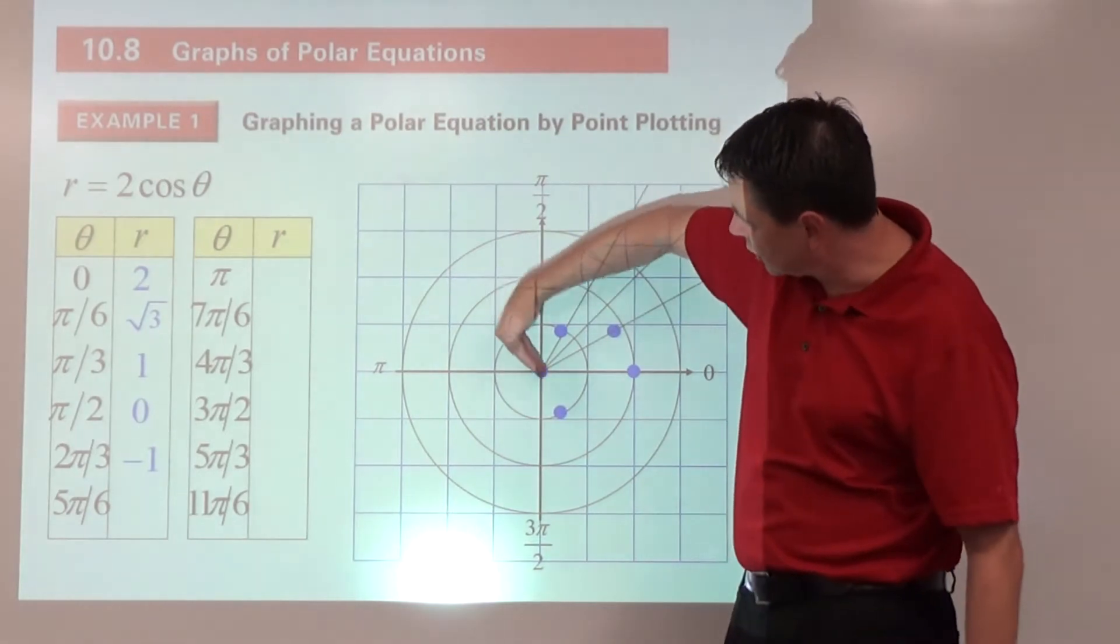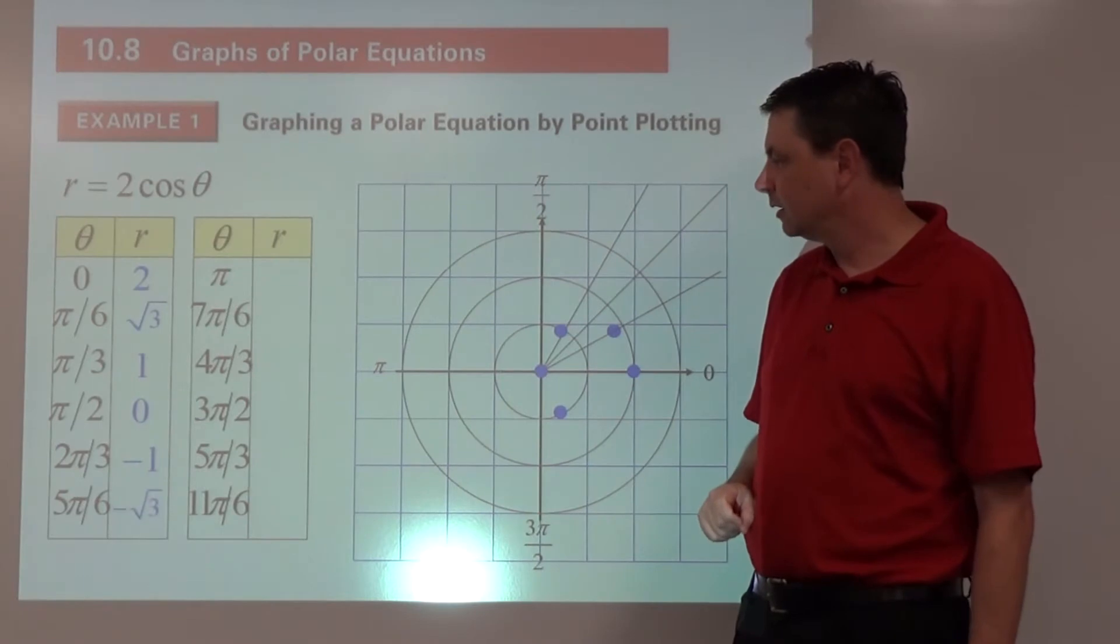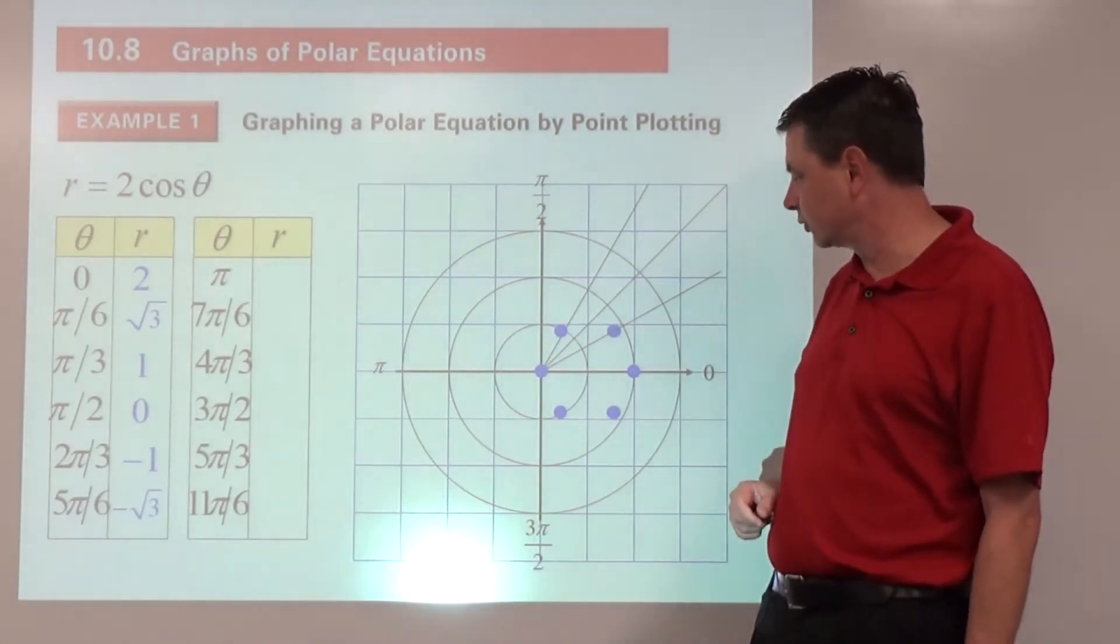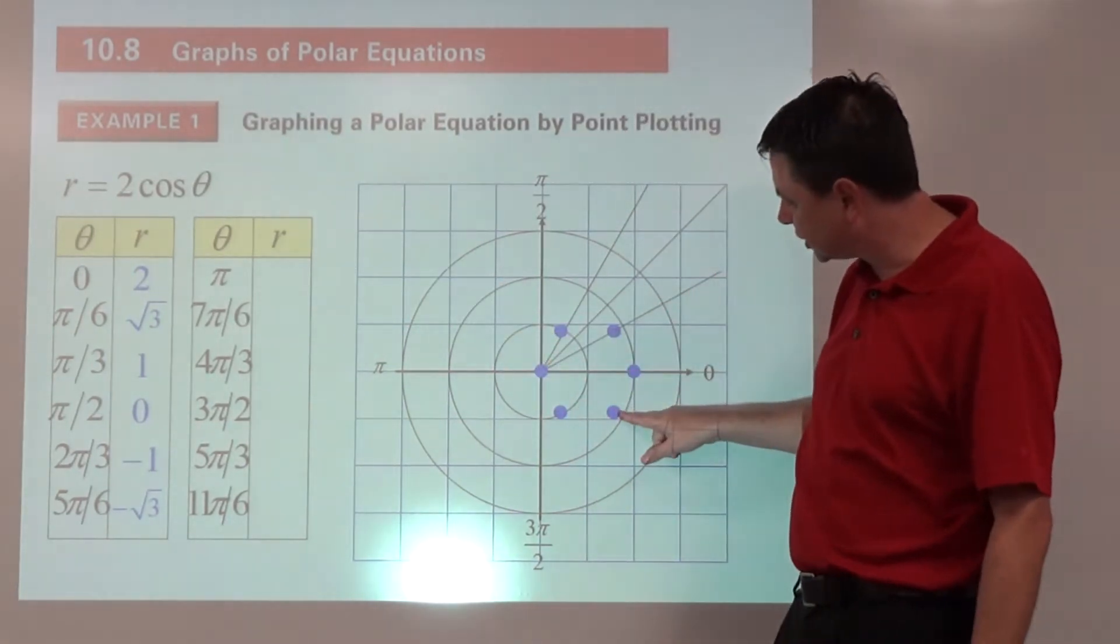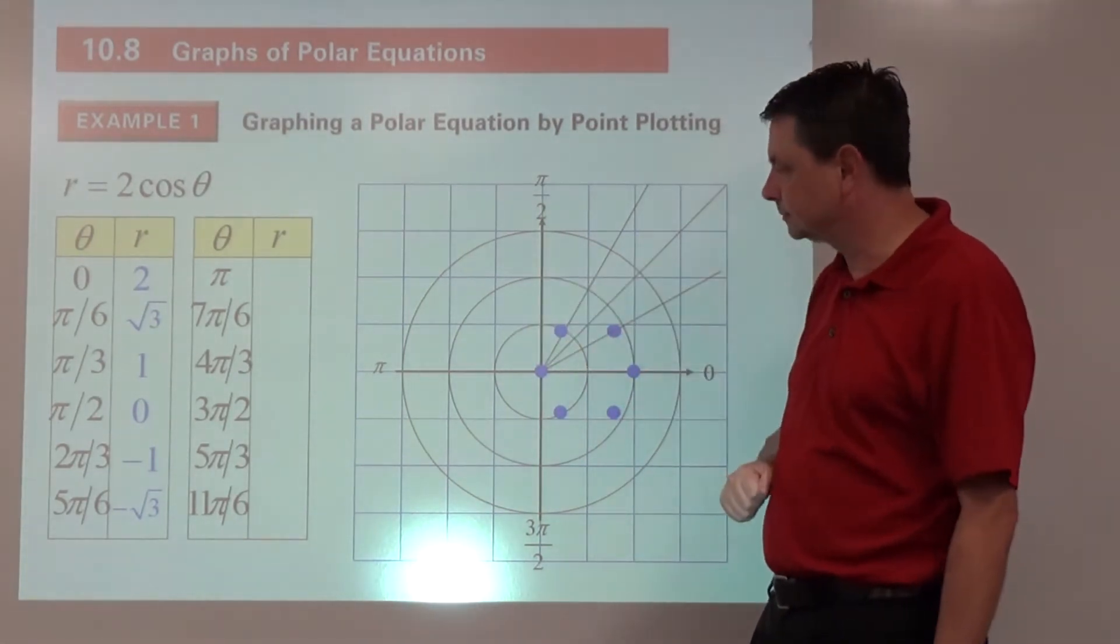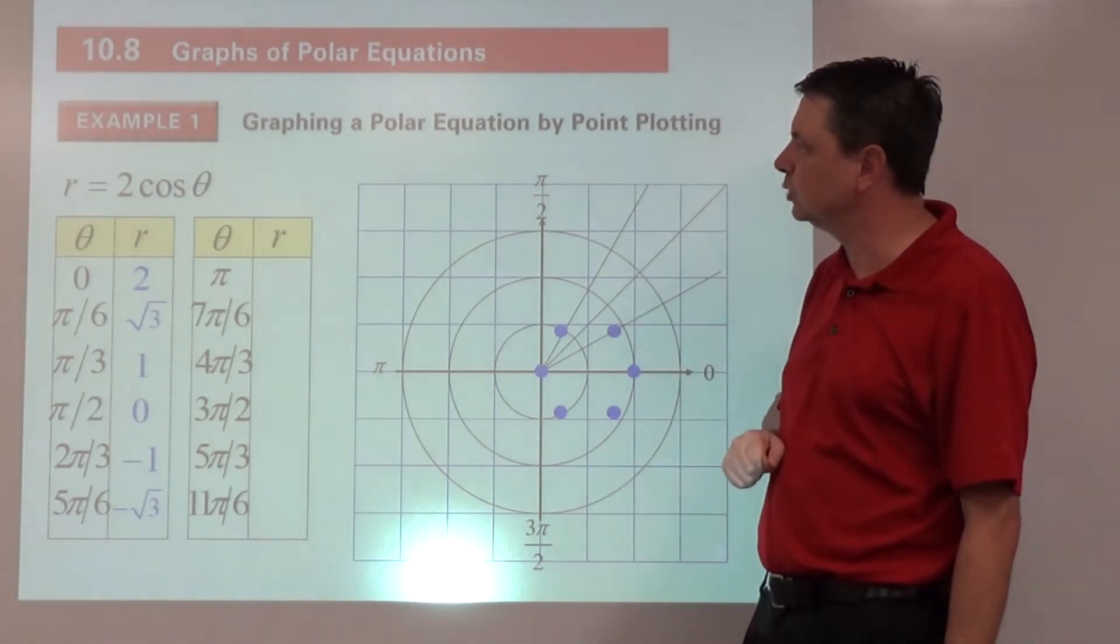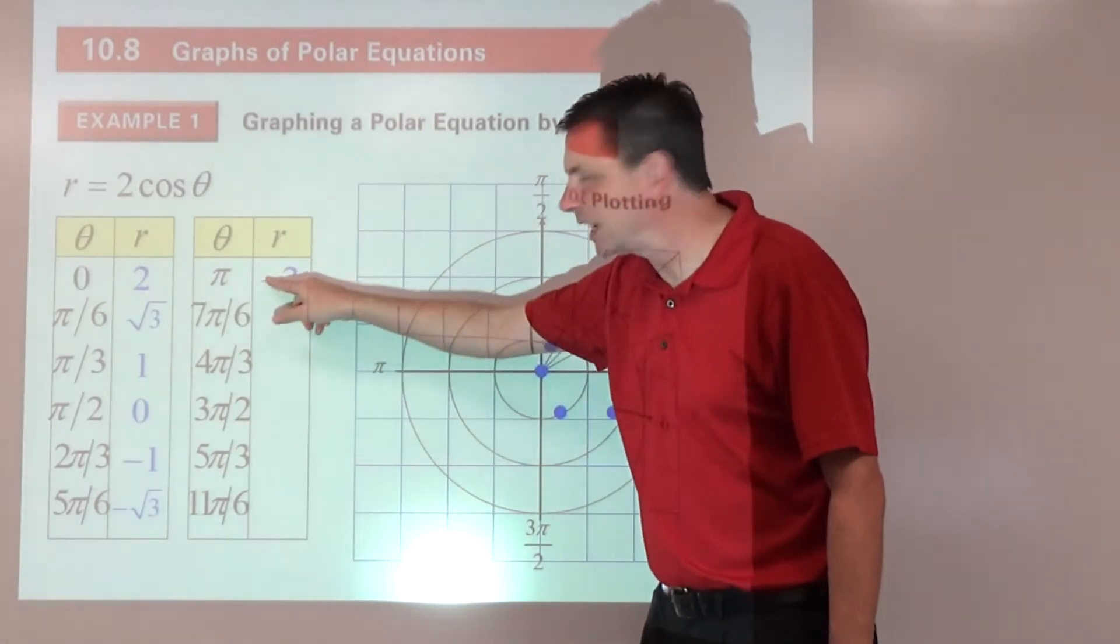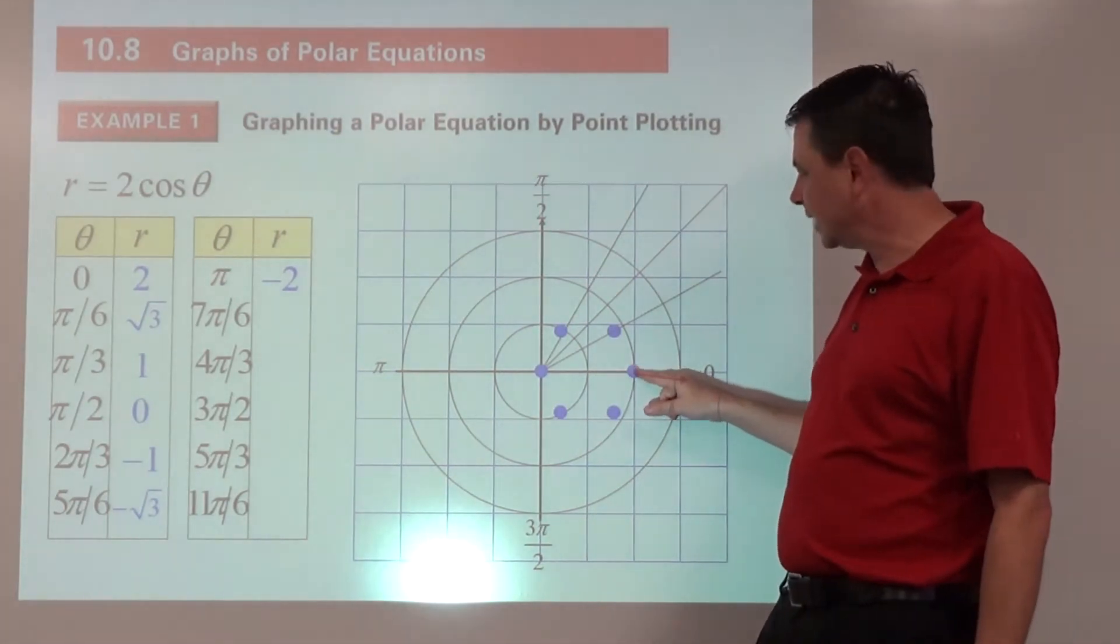So 2 pi over 3 is this way. Negative 1 means go the opposite direction or here. 5 pi over 6, cosine is negative root 3 over 2, go the opposite direction about 1.7 in that direction. Pi, cosine of pi is negative 1 times 2 is negative 2. Here's pi, negative 1 means go opposite 2 units. We're right back here at that point.